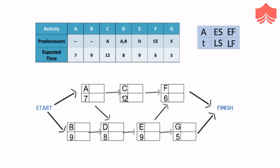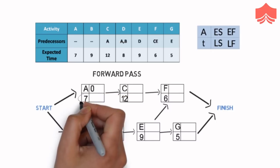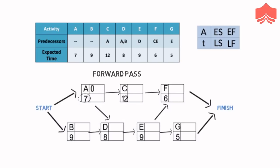The numbers below the activity name represent the time required by the respective activities. Let us do the forward pass. A is the first activity, so it can start right away. Therefore its earliest start time will be 0. It will take 7 days to be completed, so its earliest finish time will be 0 plus 7 equals 7 days. Similarly, B will have the earliest start time of 0 and earliest finish time of 9. C needs A to finish first, and we have already seen that A has the earliest finish time of 7. Therefore, earliest start time for C will be 7.